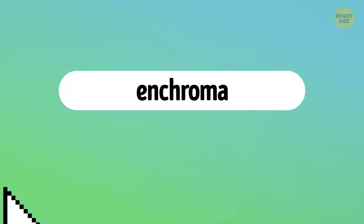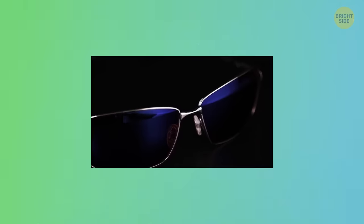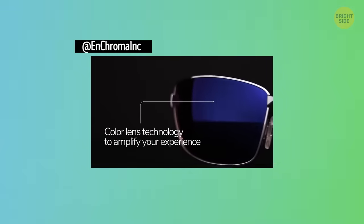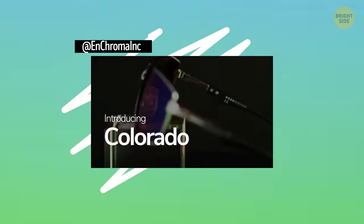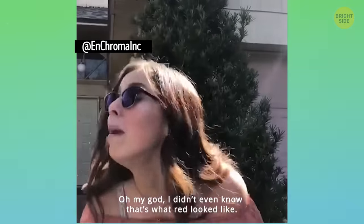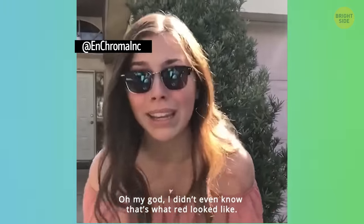But fear not. After over a decade of research and testing, the amazing EnChroma sunglasses were created. These glasses have lenses that filter out specific light wavelengths, which helps fix the overlap issue. So now, people with colorblindness can finally see the world in all its colorful glory. I gotta say, this invention is cool.